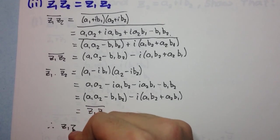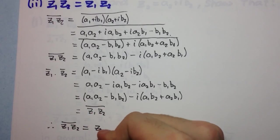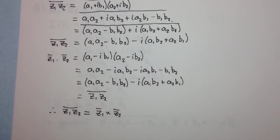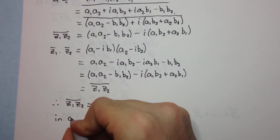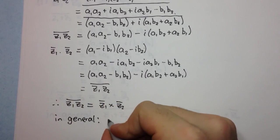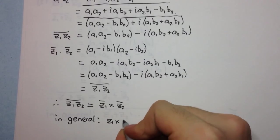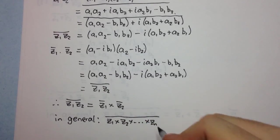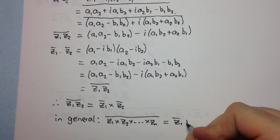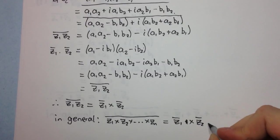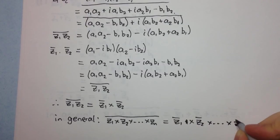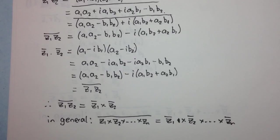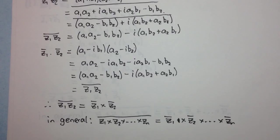Therefore z1·z2 all bar is equal to z1 bar times z2 bar. As with the sums, we can generalize: the conjugate of a product z1·z2·...·zn equals z1 bar times z2 bar times ... times zn bar. I encourage you to prove this by mathematical induction, because when you prove something to yourself, you're more likely to remember it. I hope you enjoyed the video.